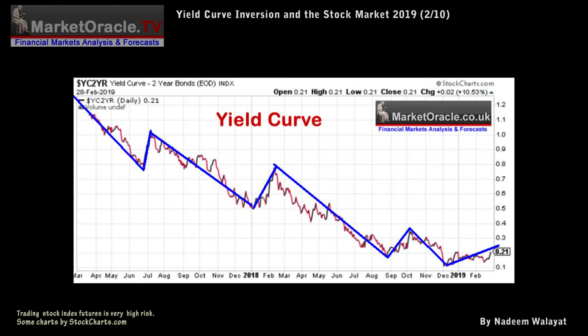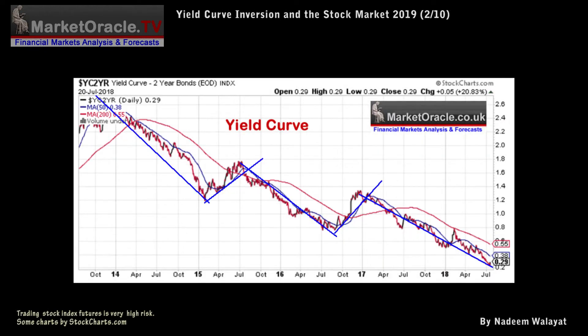So far, the Yield Curve Inversion has successfully forecast the last 3 economic downturns in the US, though the Yield Curve Inversion has proved less reliable elsewhere, especially for Australia.